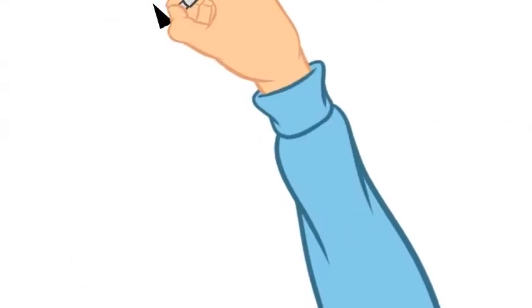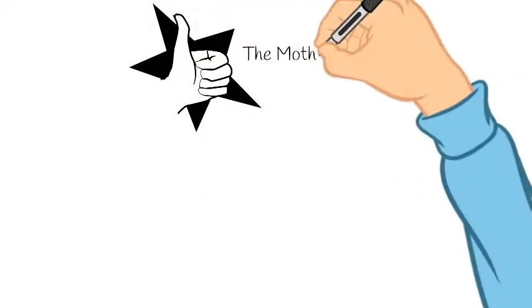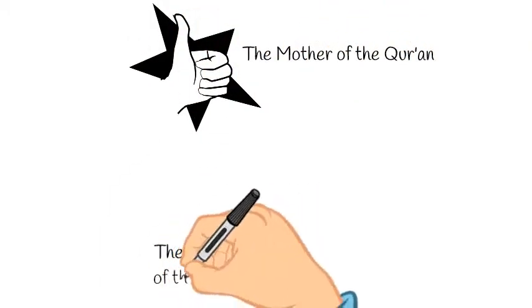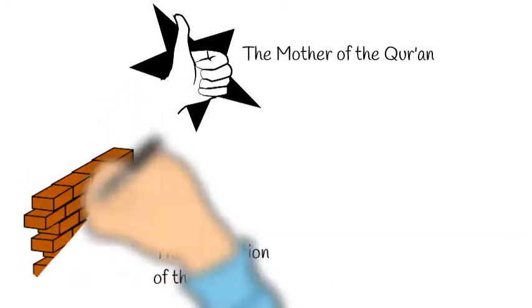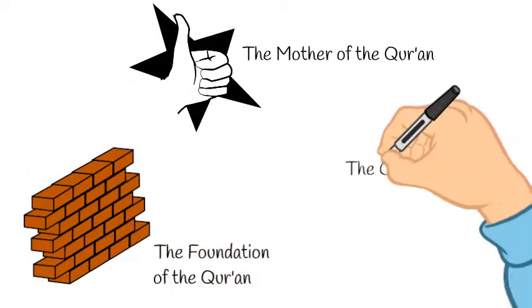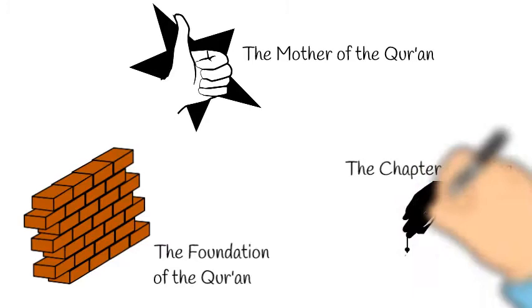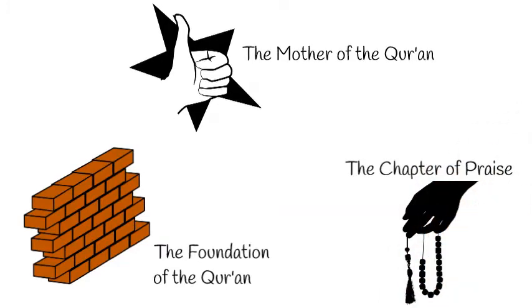It has other names which denote how great it is, like the Mother of the Qur'an (Ummul Qur'an), the Foundation of the Qur'an (Asasul Qur'an), and Surah Al-Hamd, the chapter of praise. It is also considered the seven most often repeated verses.